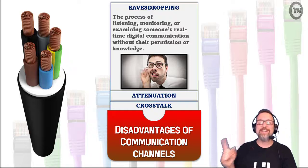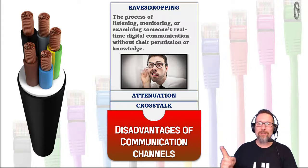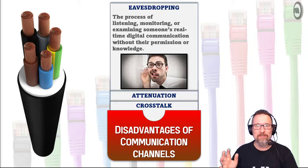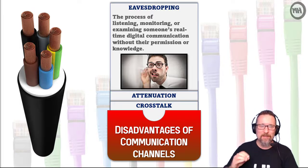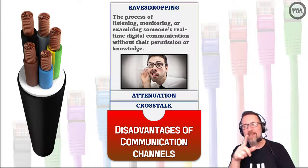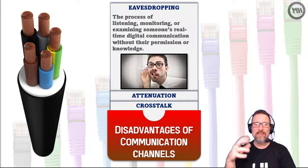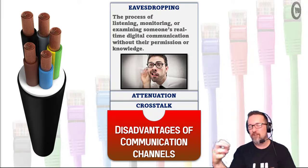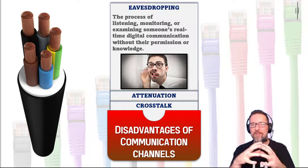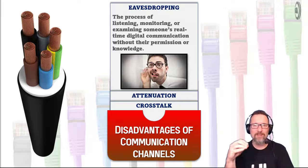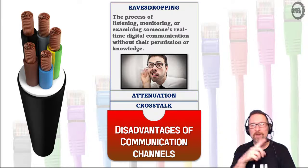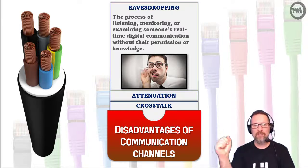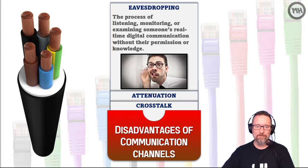You're able to intercept data going from one person to another and pick up what's going on. That's why we encrypt a lot of things these days using end-to-end encryption — so that people cannot intercept and eavesdrop during data communications across a communication line.